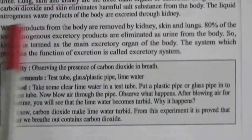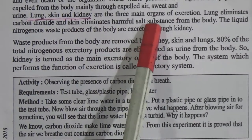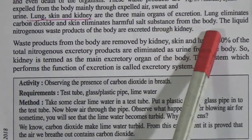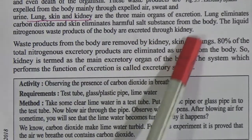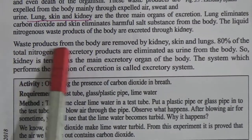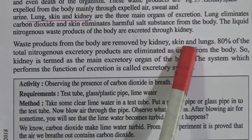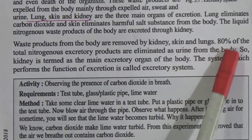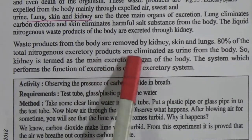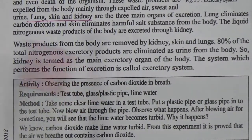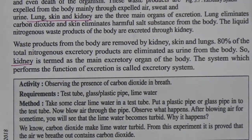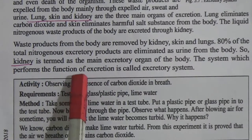These waste products are expelled from the body mainly through expelled air, sweat, and urine. Lungs, skin, and kidney are the three main organs of excretion. The lungs eliminate carbon dioxide; the skin eliminates harmful salt substances from the body. The liquid nitrogenous waste products are excreted through the kidney. 80% of the total nitrogenous excretory products are eliminated as urine from the body, so the kidney is the main excretory organ.